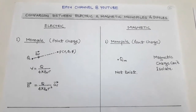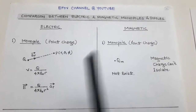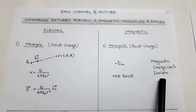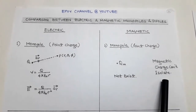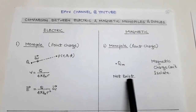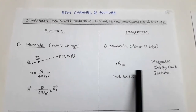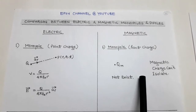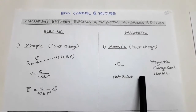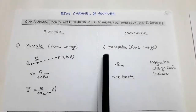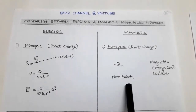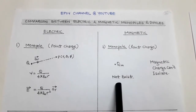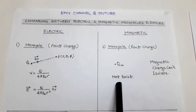In case of magnetostatics, there is no monopole because the magnetic charge cannot be isolated. If there is a north pole, there is also a south pole, so we cannot isolate a magnetic charge. Therefore, there is no monopole — the magnetic charge Q suffix M does not exist.